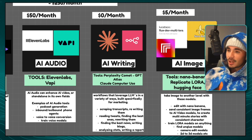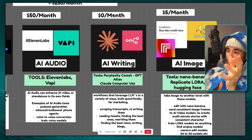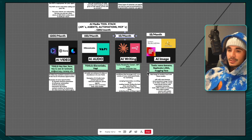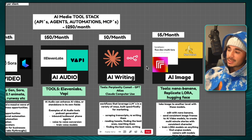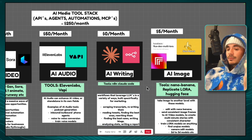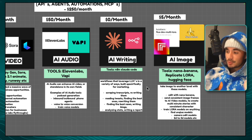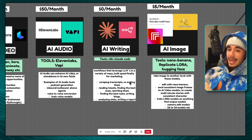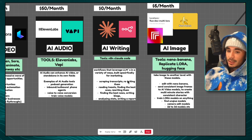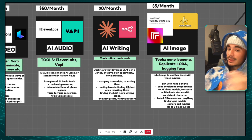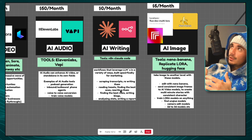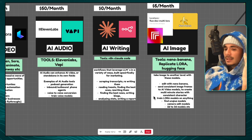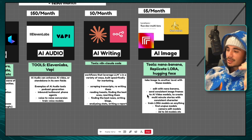AI writing can do quite a lot, and we have it at $0 a month because most of those costs are already in the coding tech stack — we're already paying for Claude Code and N8N, so writing is essentially free or just a few cents in API tokens. Writing workflows can include: scraping a competitor's transcript and rewriting it for your own video, reading competitors' tweets and rewriting the best ones, monitoring Product Hunt for new launches and writing a story about them, or analyzing stats and writing a report.